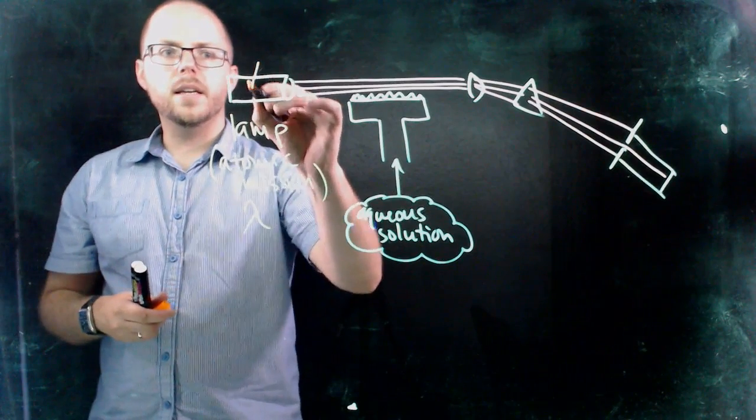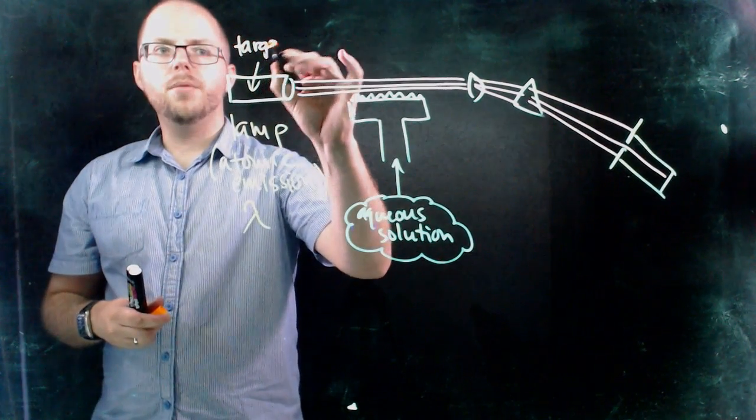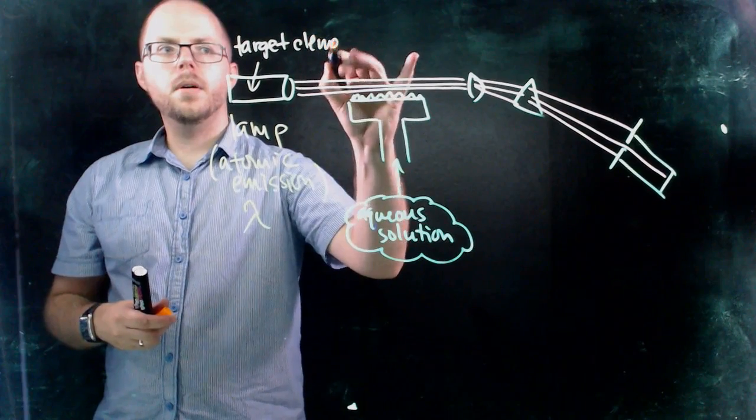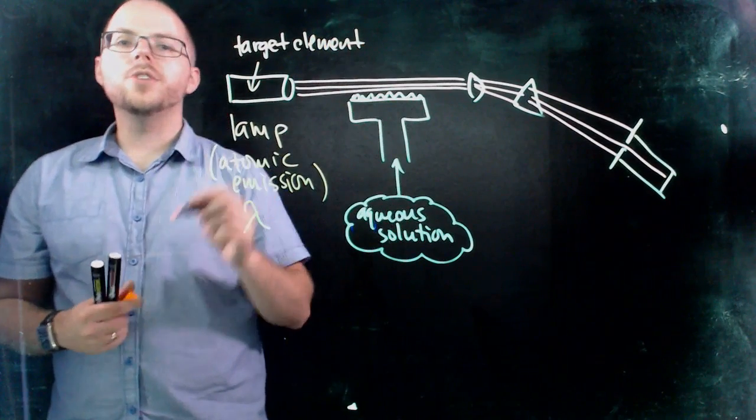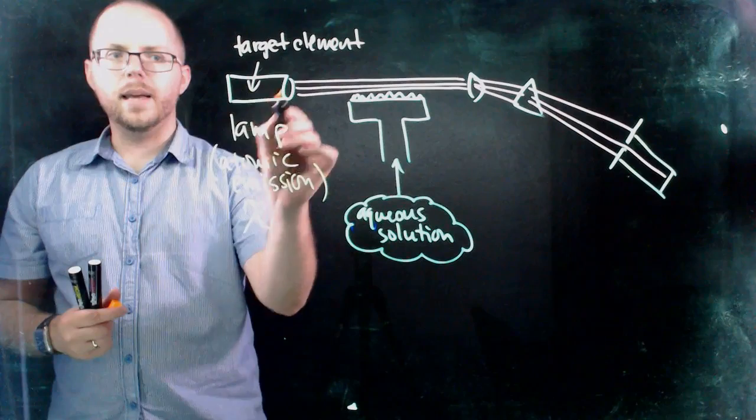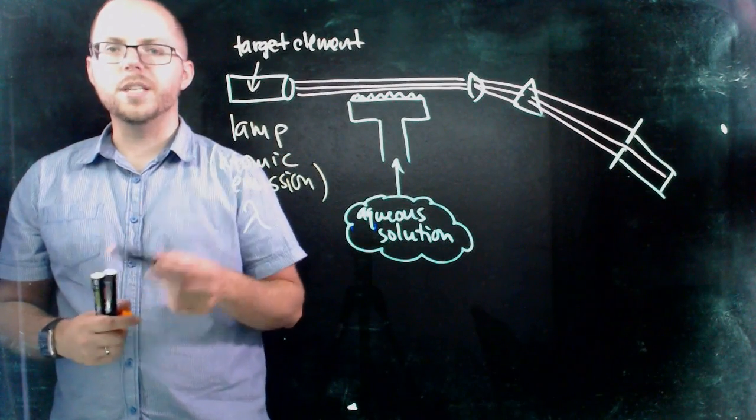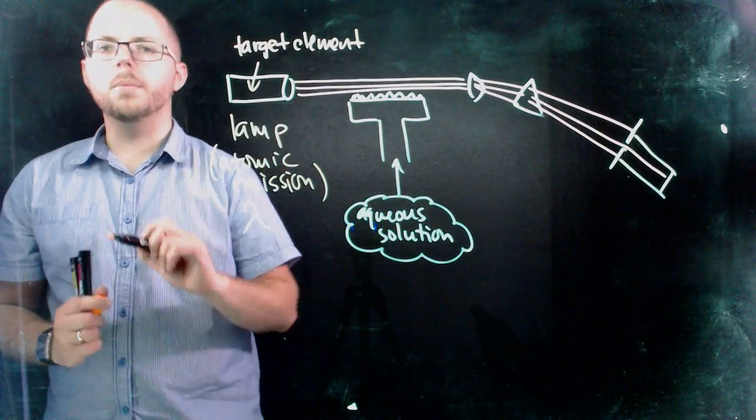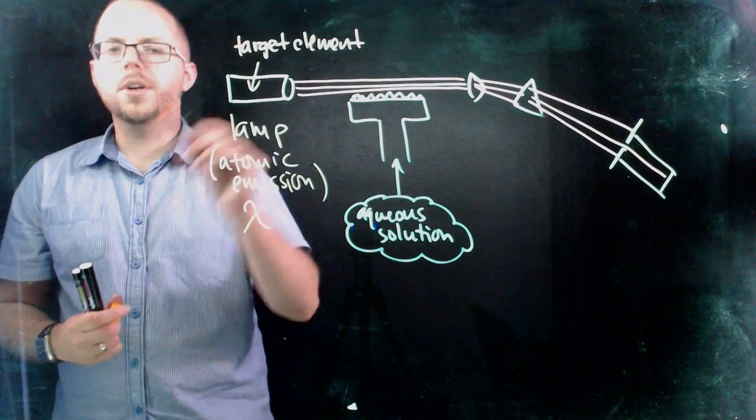Now, so what we have inside here, inside the lamp, we have what's called our target element. So that is, if we're trying to identify lead, we would have a lamp that has lead inside. If we're trying to identify cadmium, we'd have a cadmium lamp. A mercury, we're going to have a mercury lamp.